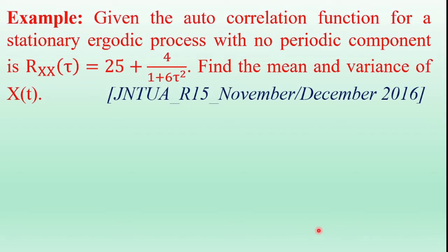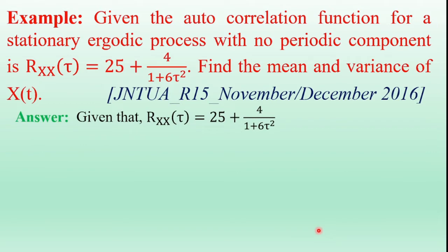Hi everyone, welcome back to precaution tutorials. In this video, I am going to discuss one more example using properties of the autocorrelation function. This is a previous examination question. The example: given the autocorrelation function for a stationary ergodic process with no periodic component is Rxx(τ) = 25 + 4/(1 + 6τ²). Find the mean and variance of x(t).